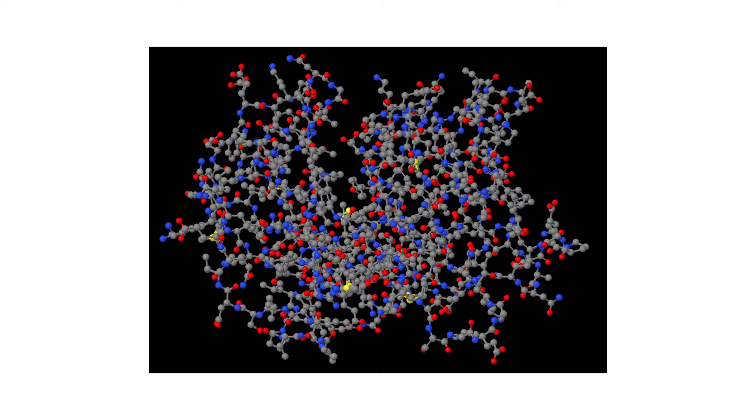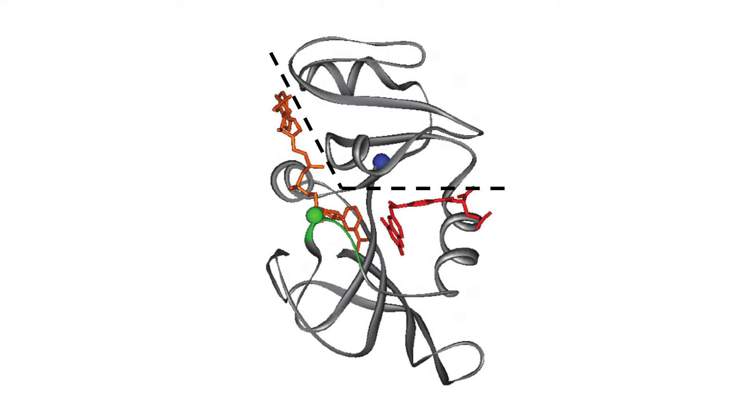Dihydrofolate and NADPH bind to DHFR at its active site, which is shaped like a long groove that runs to the protein. The active site is located in between DHFR's two subdomains, the adenosine binding subdomain and the loop subdomain.